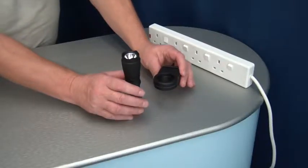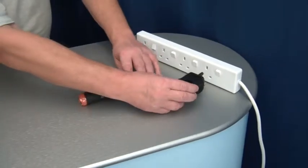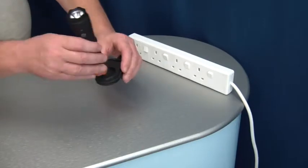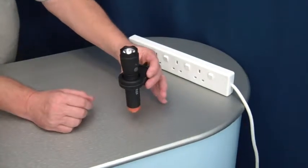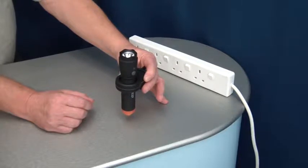The torch just sits inside the holder. The holder plugs into a standard 13 amp 3 pin socket. The holder charges and maintains the built-in battery inside the torch.